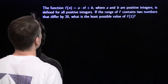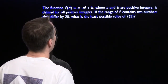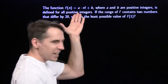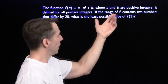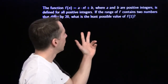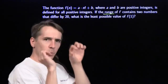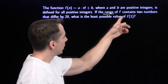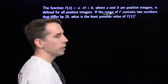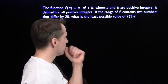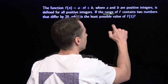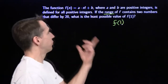On to the final problem. The function is f(n) = a·n! + b, where a and b are positive integers, defined for all positive integers n. The range of f contains two numbers that differ by 20, and we want the least possible value of f(1). The obvious starting point is to plug in n=1.